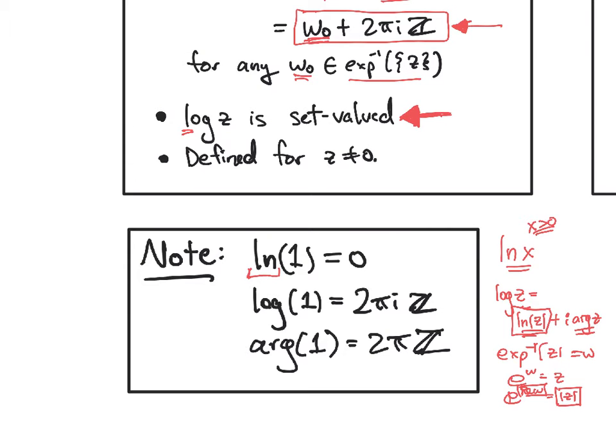I just want to point out that natural log of one, as usual, is zero. But log of one will be all pre-images of one, which would be 2πi ℤ. We'll define argument in a moment, but it's basically just going to be the imaginary part of the log, so you get 2πℤ.